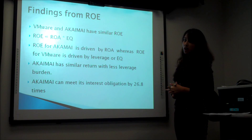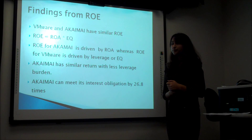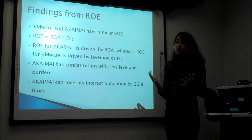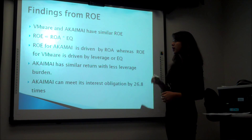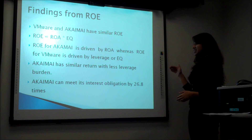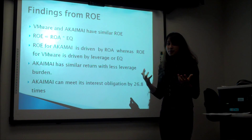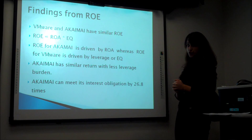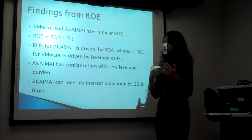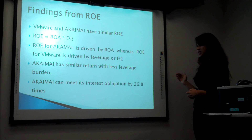VMware and Akamai have a similar ROE. Let's consider the measures of ROE to analyze further. ROE is given by ROA times equity multiplier. ROE for Akamai is driven by ROA, whereas ROE for VMware is driven by leverage. In this case, we prefer Akamai as their ROE is similar to VMware's but with a lesser leverage burden. Akamai can meet its interest obligations 26.8 times.